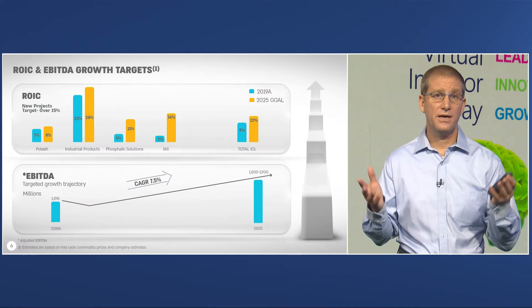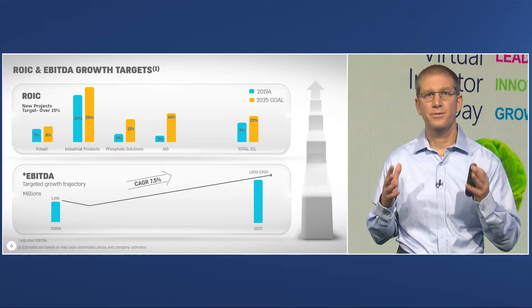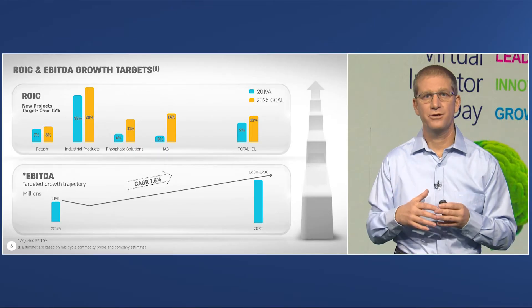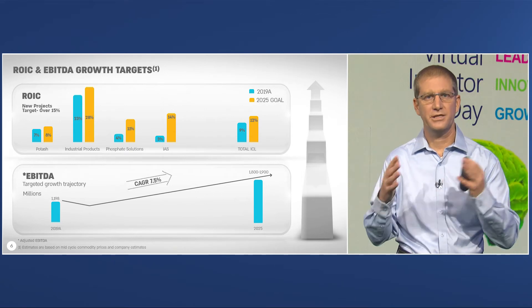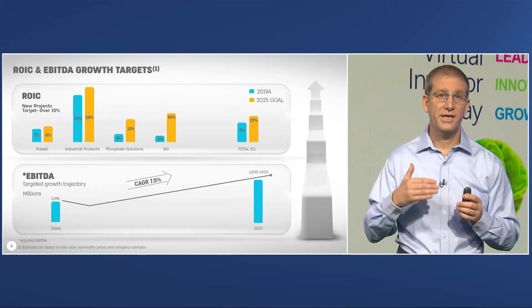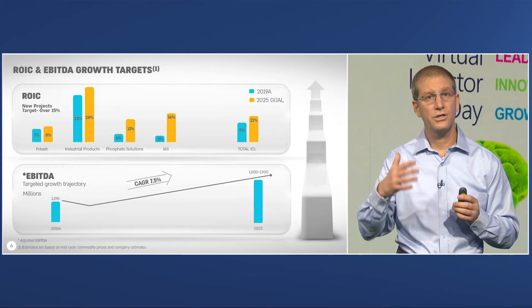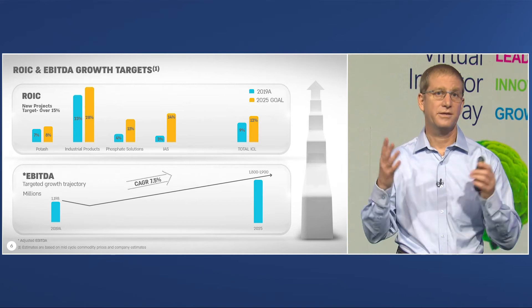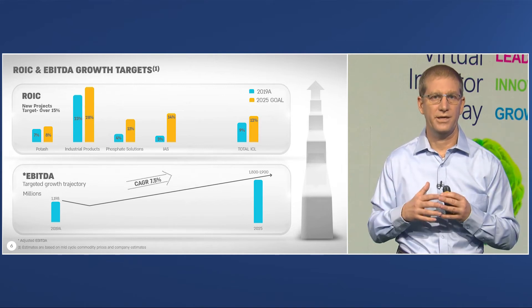Return on invested capital is another important aspect of our finance management and our internal allocation of funds between the various business units. You can see a large volatility of ROI between the different businesses as they are very different with their capital needs. Over the next five years, we see good improvement in all of our businesses, yet the different characteristics of them will remain.